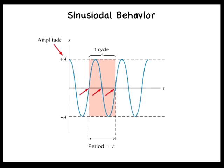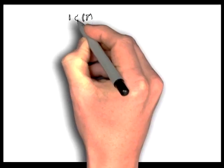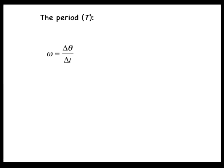We now want to know the relationship between the period and the frequency for simple harmonic motion. We know that omega is constant for the motion, since the object is assumed to undergo uniform circular motion on the reference circle. Therefore, the angular frequency is equal to the average angular frequency, and we can write omega equals delta theta divided by delta t. For one complete revolution, delta theta equals two pi radians and the time is equal to the period T. Therefore, T, the period, is equal to 2 pi divided by omega.